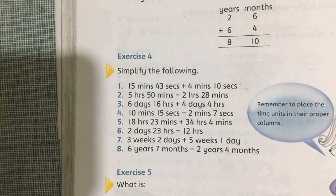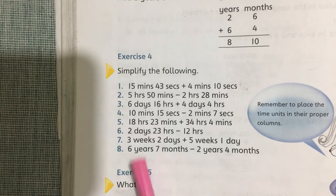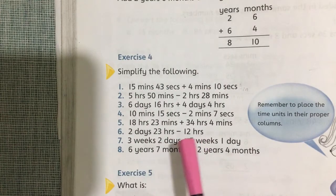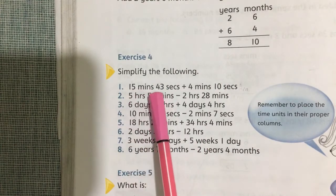Assalamu alaikum grade 4. Today we will solve Exercise number 4, Unit number 7. Exercise 4 is simplify the following. Here are some addition and subtraction of time and you have to solve them. First is 15 minutes 43 seconds.